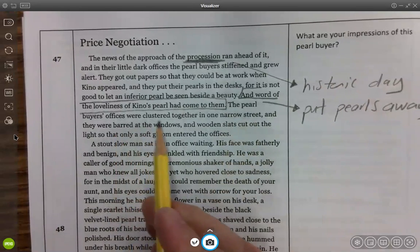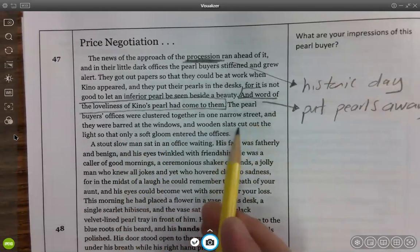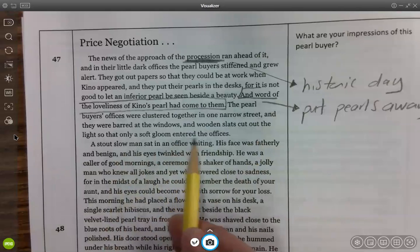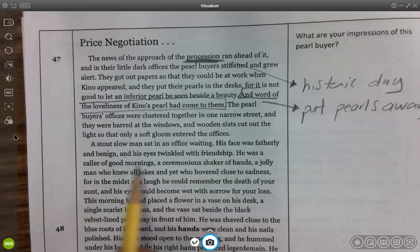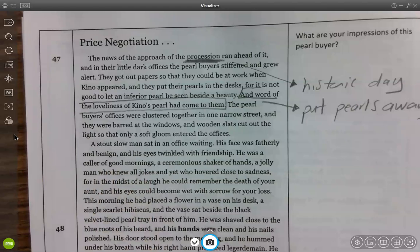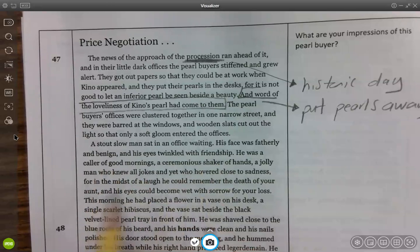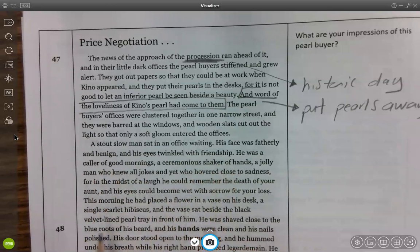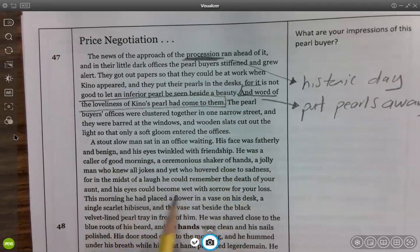I made two marks. I tend to make little arrows as part of my active reading. The pearl buyers' offices were clustered together in one narrow street and they were barred at the windows and wooden slats cut out the light so that only a soft gloom entered the offices. A stout man sat in his office waiting. His face was fatherly and benign, benign meaning like innocent or even harmless. And his eyes twinkled with friendship. He was a caller of good mornings, a ceremonious shaker of hands, a jolly man who knew all jokes and yet who hovered close to sadness. For the midst of a laugh, he could remember the death of your aunt and his eyes could become wet with sorrow for your loss.